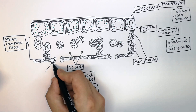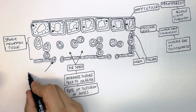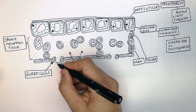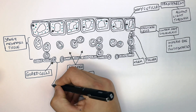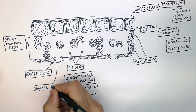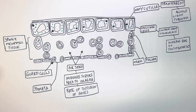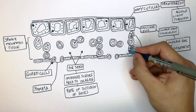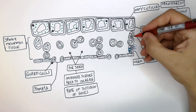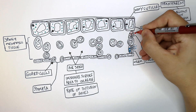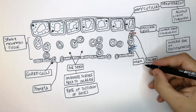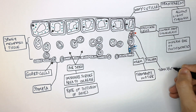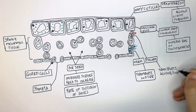You've now got the guard cells. These guard cells allow for an opening called the stomata, so the guard cells surround the stomata. Water enters the leaf from the roots via the xylem, and the sucrose exits via the phloem. So the xylem transports water and the phloem transports glucose as sucrose.